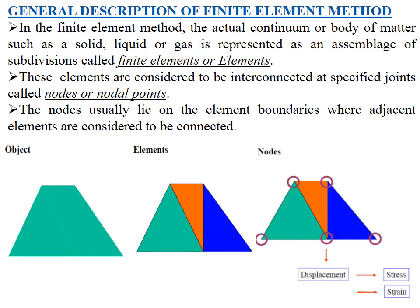At these particular nodes, we find the displacement, stresses, and strains which are present in the structure or body. This example is shown by taking a simple object, dividing it into three elements, identifying the nodes, and at those nodes we find the displacement, stresses, and strains. In the same manner, many complex structures and bodies are divided and analyzed for displacement, stresses, and strains at particular nodal points.